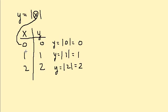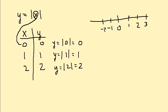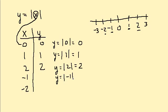I also need to pick some numbers on the left side of 0. On a number line we have 0, 1, 2, 3, and also negative 1, negative 2, negative 3. I chose 1 and 2, but I also want to choose numbers on the left-hand side. So I'll choose negative 1 and negative 2. That gives me y equals the absolute value of negative 1, which is positive 1, and y equals the absolute value of negative 2, which equals positive 2.